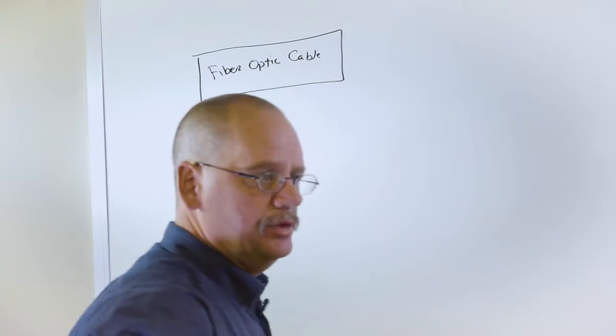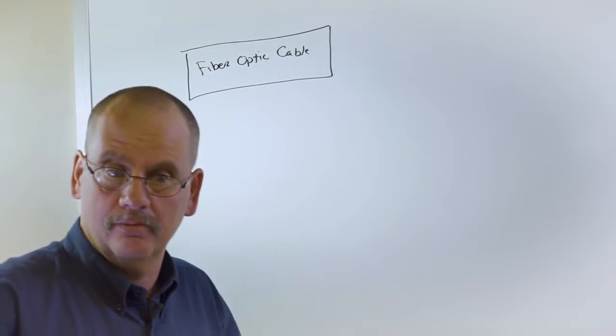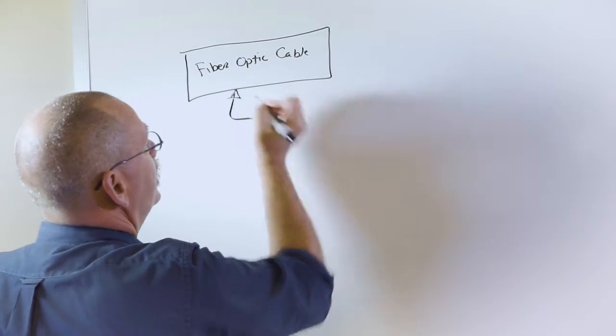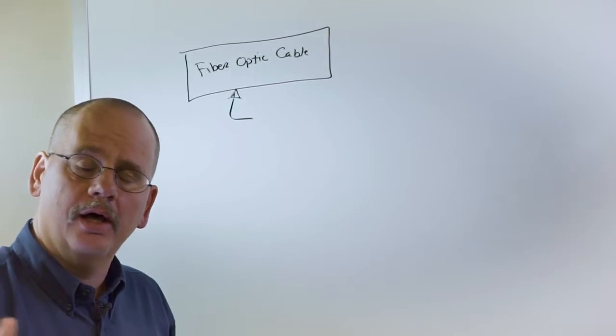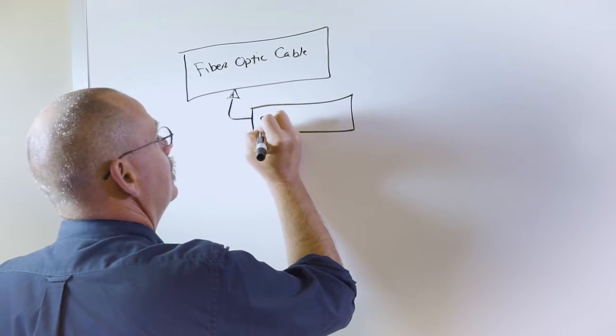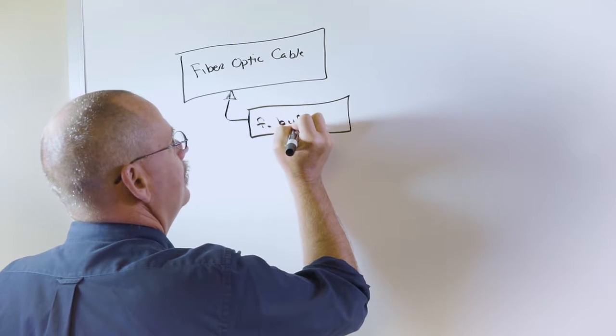The fiber optic cable is a linear feature class for the cables. There is a one-to-many relationship of the fiber optic cable which is the buffer tube. In this case it's called F buffer tube.